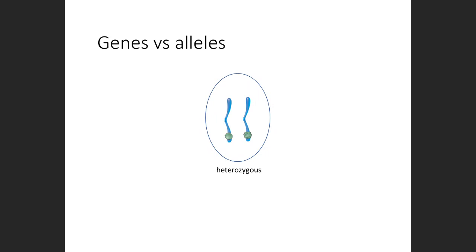Now at the seed shape gene, one of the chromosomes is carrying the round shape allele while the homologous chromosome is carrying the wrinkled shape allele. So this is what I mean by the chromosomes not being completely identical. They have the same gene at the same positions, but there are two forms of the gene that we call alleles. So in this case, a round seed allele and a wrinkled seed allele. This cell is heterozygous for seed shape.